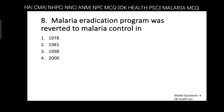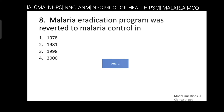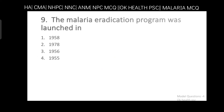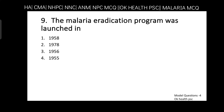Question number eight: when did malaria eradication program convert to malaria control? Options: 1978, 1981, 1998, or 2000. The correct answer is 1978. Question number nine: the malaria eradication program was launched in which year? 1958, 1978, 1956, or 1955? Answer is option one — 1958.